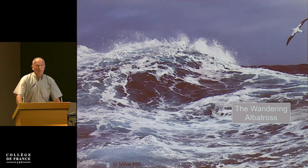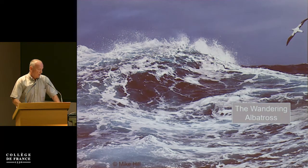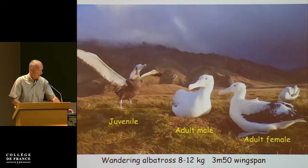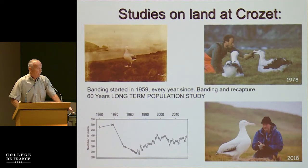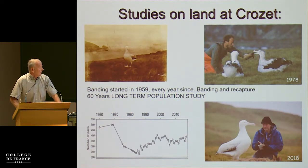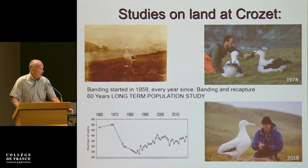Another example is wandering albatrosses — very large birds of 8 to 10 kilograms with a wingspan of 3.5 meters, breeding on small islands around Antarctica. We have monitored this population over the past 60 years. The Crozet Island population declined in the 1970s and 1980s, then increased, and is now stabilizing and slightly decreasing. What could have caused this change in population?